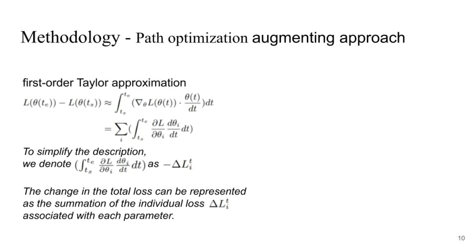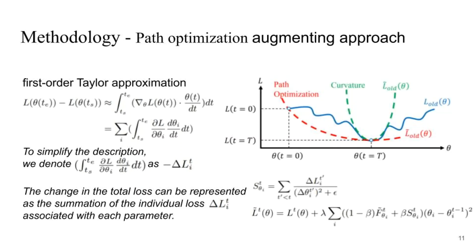In particular, the importance score is determined by accumulating over the entire training trajectory. The change in loss L over the time interval from t_s to t_e can be approximated by using the first-order Taylor approximation. Therefore, the change in the total loss can be represented as the summation of individual loss delta L_t_i associated with each parameter. From the reference definition of importance scores, each score is divided by the change of parameters for normalization.